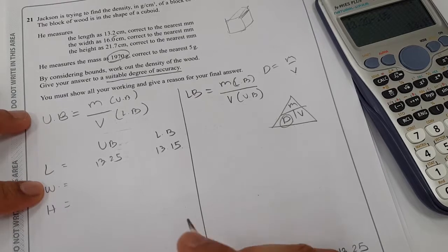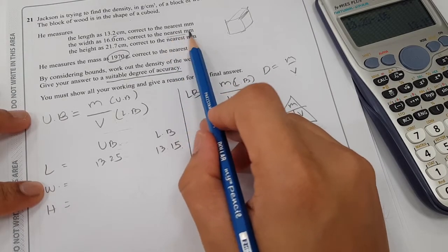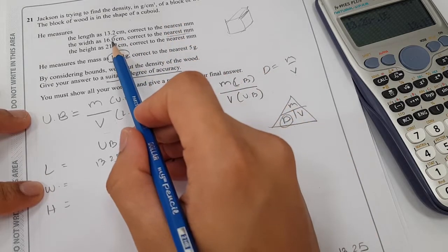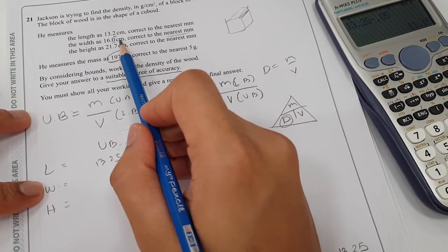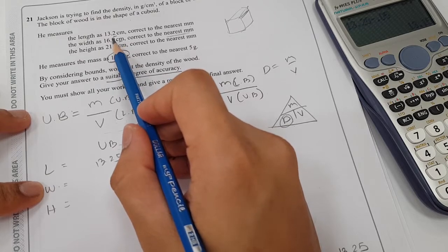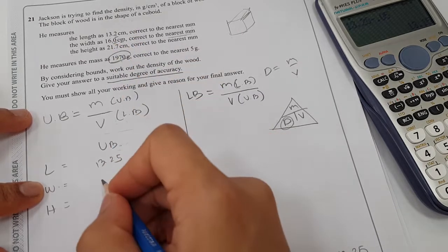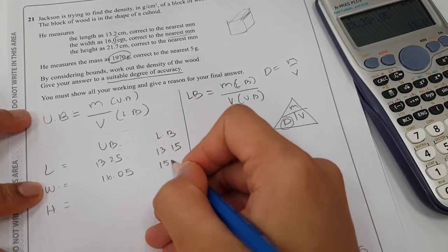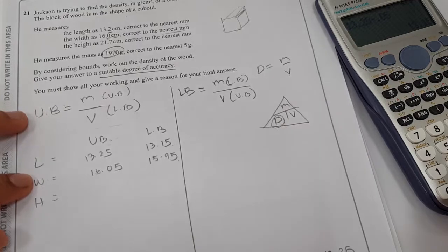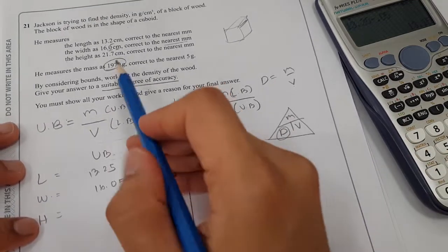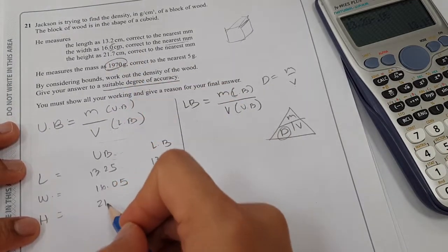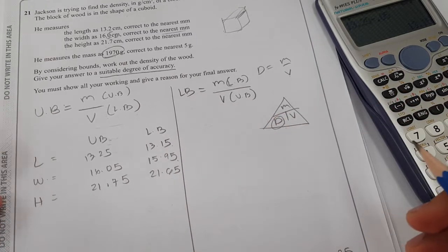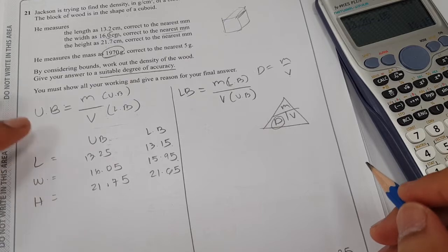Next, for the width, it's the same thing. Nearest millimeter. When you say millimeter, you have to multiply by 10. So it would be 160. So we're going to round here. That would be 16.05 and 15.95. Next, for the height, you will do the same thing. So 21.65 and 21.55. So we are now set with the dimensions.